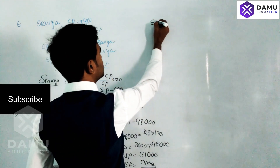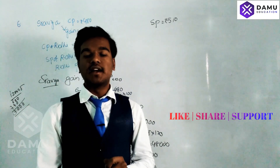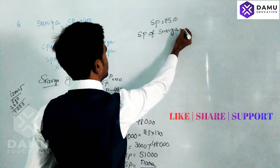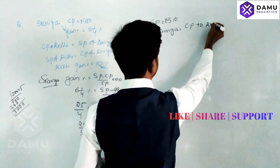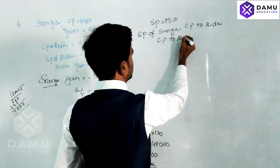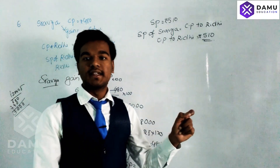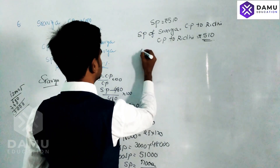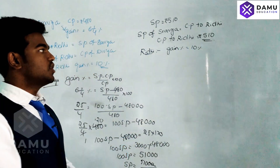So the selling price of Shravia equals 510 rupees. Since Shravia's selling price equals the cost price to Riti, the cost price of Riti is 510 rupees. Now we have found the cost price of Riti is 510 rupees. Riti also got a gain percentage of 10%, so we know the cost price of Riti and the gain percentage, and we can calculate the selling price of Riti.